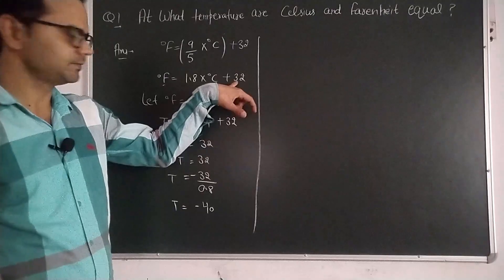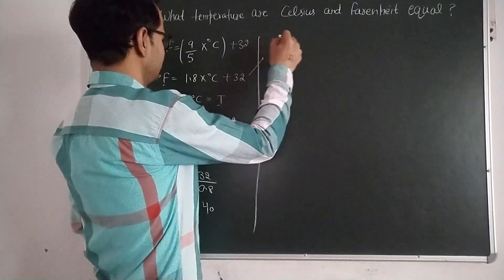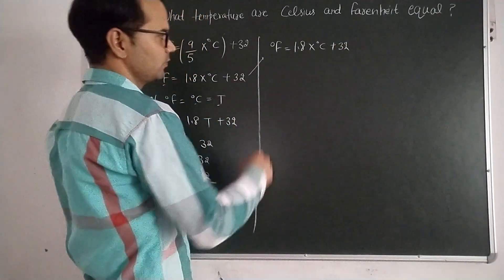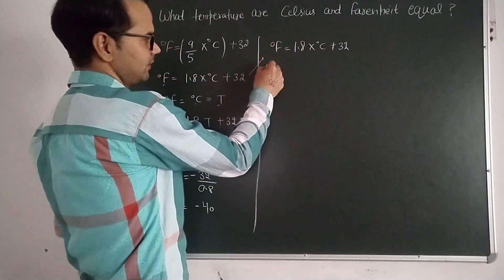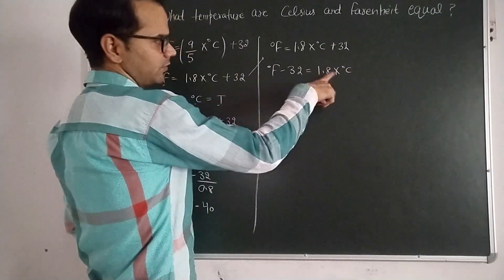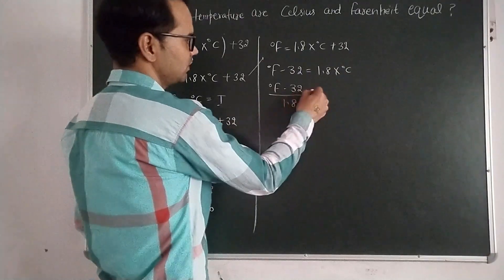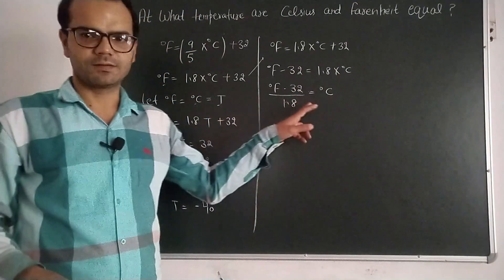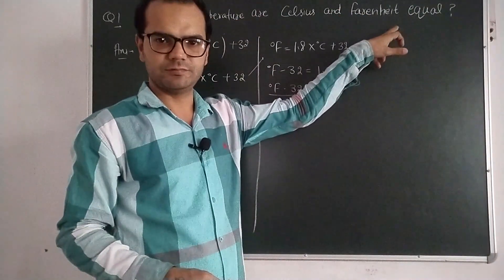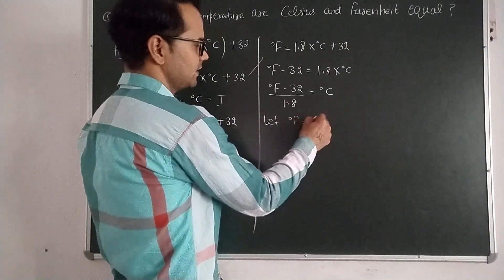We can also prove this using another equation, by rearranging the formula. Degree Fahrenheit = 1.8 × degree Celsius + 32 can be rearranged to: degree Celsius = (degree Fahrenheit − 32) ÷ 1.8. Again, we have to find the temperature value at which Celsius and Fahrenheit will show the same reading, so let degree Fahrenheit = degree Celsius = t.